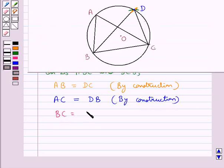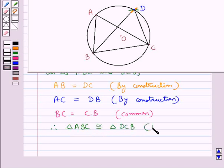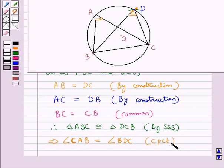Then BC is equal to CB, that is the common side. Therefore we say that triangle ABC is congruent to the triangle DCB by the SSS congruence rule. And this implies that angle CAB is equal to the angle BDC. This is by the CPCT, that is corresponding parts of congruent triangles.